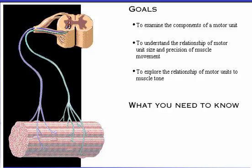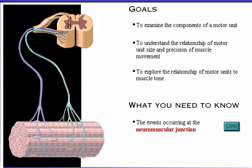Here's what you need to know: the events occurring at the neuromuscular junction, and the definition of a motor neuron. To review the events occurring at the neuromuscular junction, click the link button.